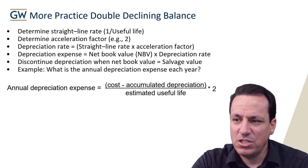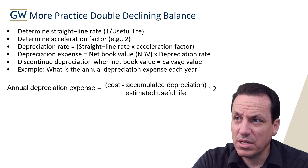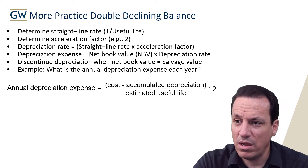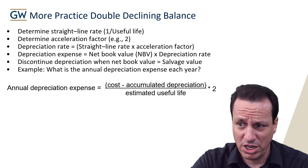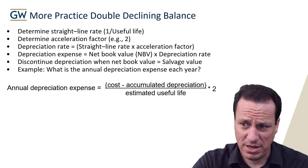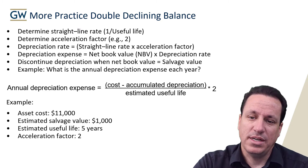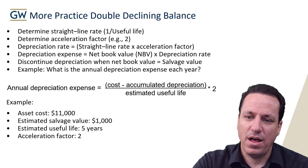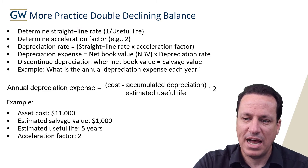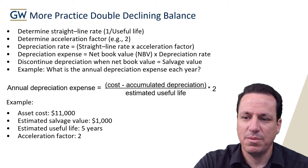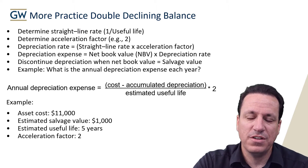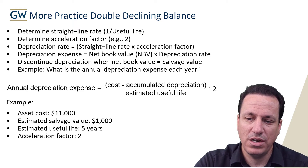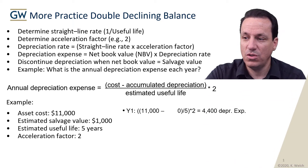The annual depreciation expense using double declining balance — another way to formulate what we've just talked about — is cost minus accumulated depreciation, divided by the estimated useful life, times two. As an example, we have an asset cost of $11,000, an estimated salvage value of $1,000, an estimated useful life of five years, and an acceleration factor of two.